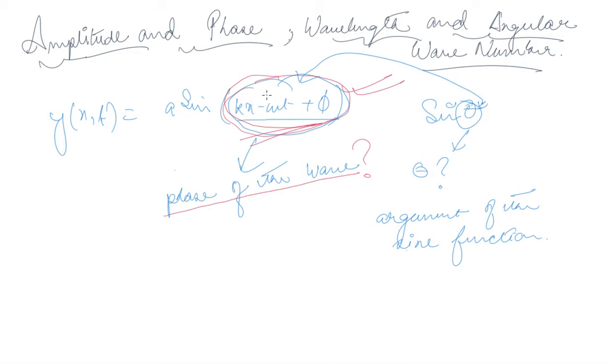Now I also want to tell the students not to get confused regarding kx minus omega t. In some books you will be given as omega t minus kx. This does not matter because the negative sign will automatically adjust. If you take minus common, this becomes minus a sine omega t minus kx. If the value falls in the third and fourth quadrant, sine becomes negative, so this value will automatically readjust. This is what we understand by the phase of the wave.